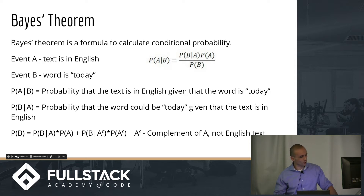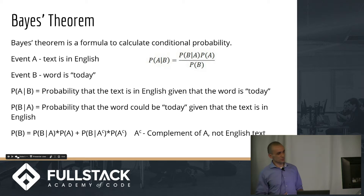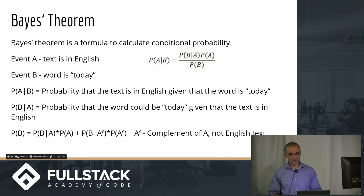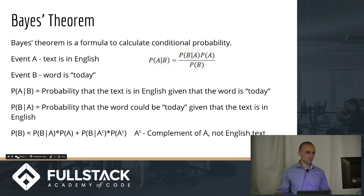There's a bit of probability going on in this algorithm. If you've taken any probability courses, you've probably heard of Bayes' theorem — it's the foundation for conditional probability. The Bayes theorem is used in this algorithm. The idea is to give you the probability that a text is English, Spanish, or French given a particular word.